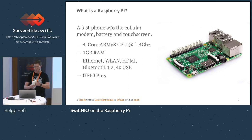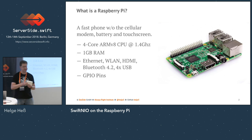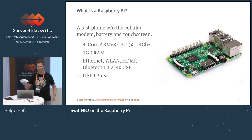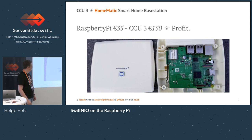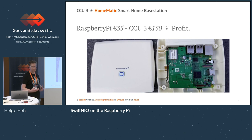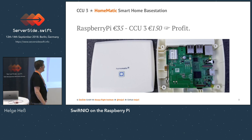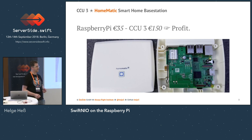And then there are things like this — does someone know what it is? It's a CCU3, a base station for a home automation system called HOMATIC, which was popular in Europe. Someone opened it up and it's actually a Raspberry Pi in a fancy case. They sell that for 150 euros, and the Raspberry Pi costs 35 euros to the consumer. My point is: if you manage to add value to the Raspberry Pi, you can sell it at a much higher price.